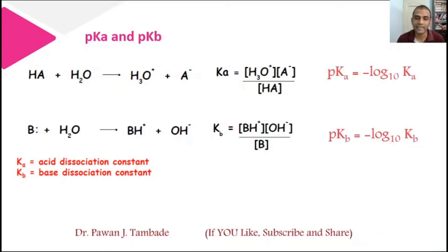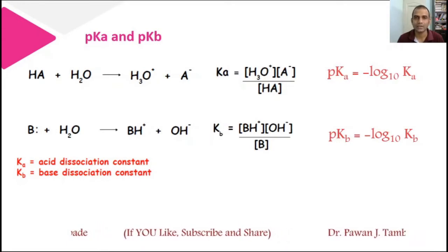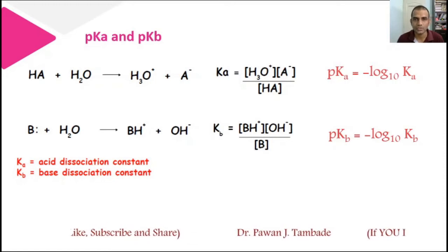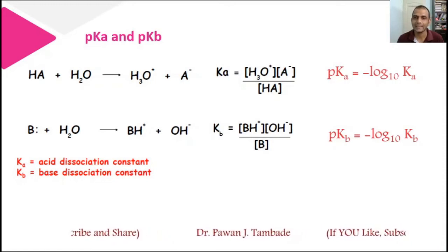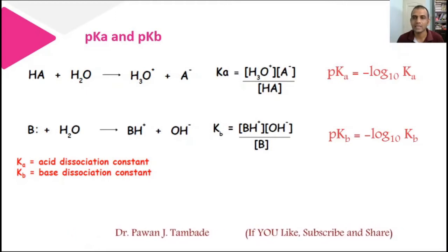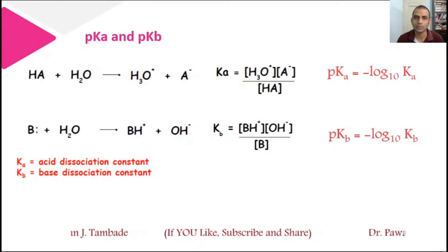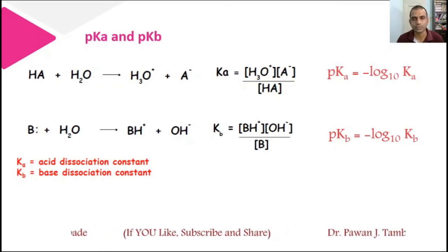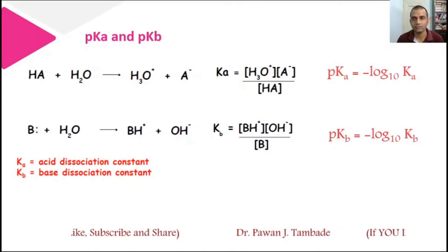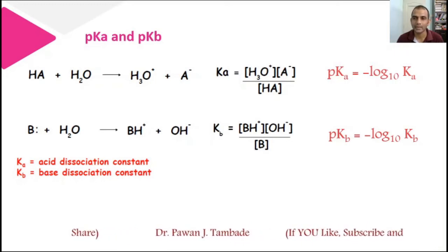When we go through values of Ka and Kb for acids and bases, we find that these values are quite difficult to remember. For the sake of chemists, these Ka and Kb values are converted into pKa and pKb values. The relation is: pKa is the negative logarithm of Ka, and similarly pKb is the negative logarithm of Kb. One thing should be kept in mind: Ka and pKa are inversely proportional, and similarly Kb and pKb are inversely proportional. If Ka is more, then pKa is less, and vice versa.